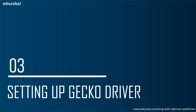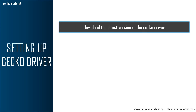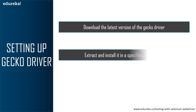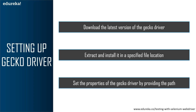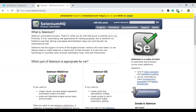To set up gecko driver on your system: first, go to the official website and download the latest version of gecko driver for Mozilla Firefox. Next, extract and install it in a specified file location. Finally, set the properties of the gecko driver by providing the path to it.